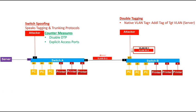Once this packet passes through the trunk port on switch B, the trunk port strips off the outer VLAN ID, since VLAN ID 1 is the native VLAN of switch B. Once the frame reaches the other end — the trunk port on switch A — switch A thinks that this frame belongs to the server VLAN and sends the frame to the server. In this way, the attacker is able to hop from VLAN 1 to VLAN 2 using double tagging.